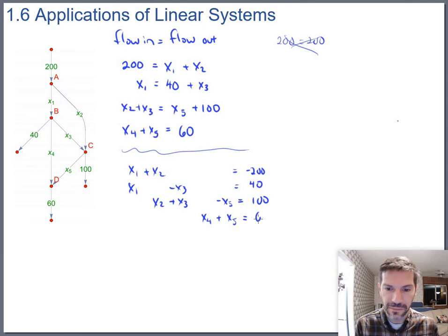The next one, x2 plus x3 minus x5 equals 100. And the last one, x4 plus x5 equals 60.